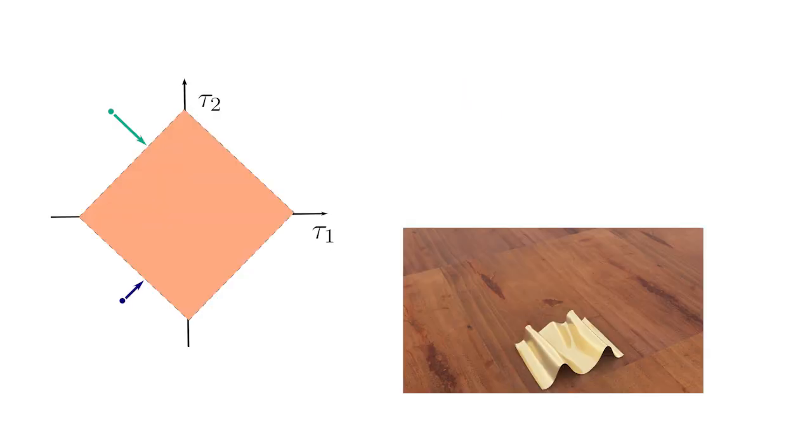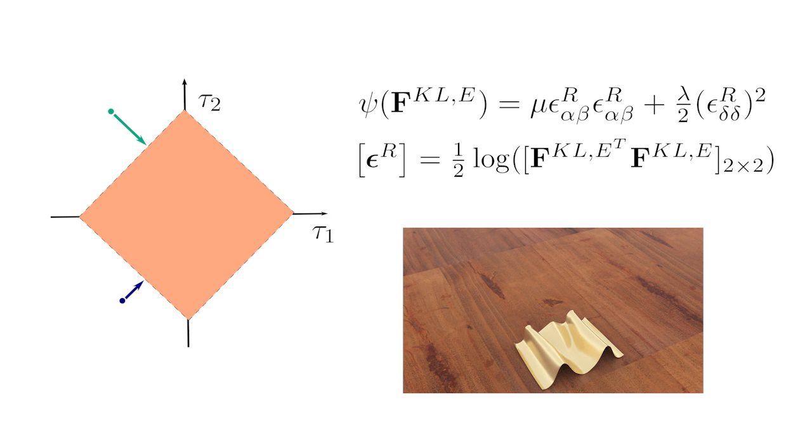During F^KLP, we impose approximated von Mises yield condition with associative return mapping algorithm on the trial Kirchhoff stress given by our strain energy by projecting the principal stress onto a diamond-shaped feasible region. We use a quadratic strain energy function in terms of right Cauchy strain on the tangent plane of the deformed laminate.